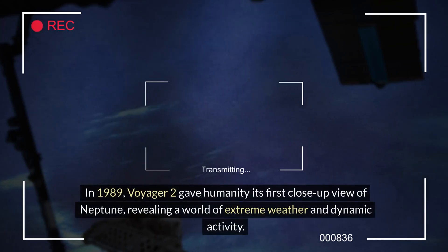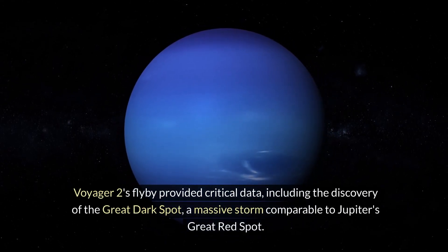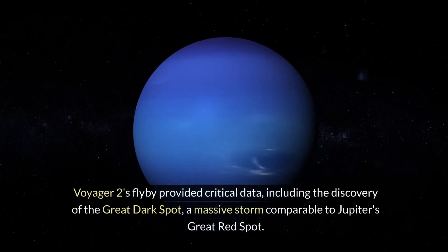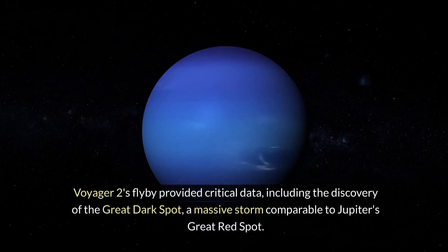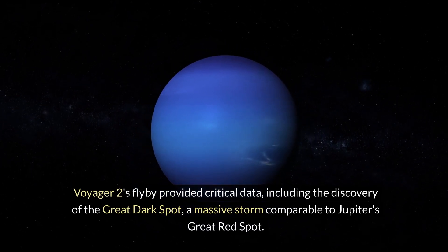Voyager 2 findings: In 1989, Voyager 2 gave humanity its first close-up view of Neptune, revealing a world of extreme weather and dynamic activity. Voyager 2's flyby provided critical data, including the discovery of the Great Dark Spot, a massive storm comparable to Jupiter's Great Red Spot.